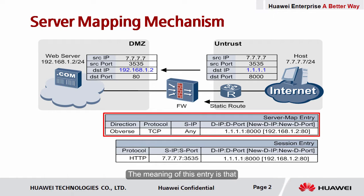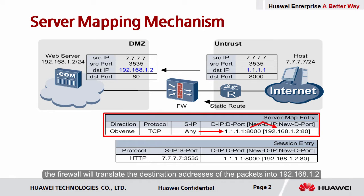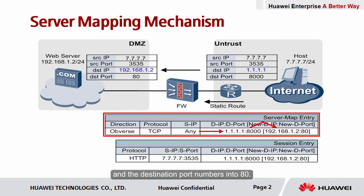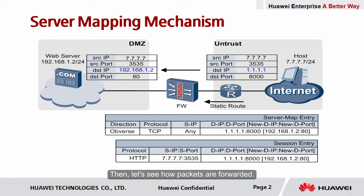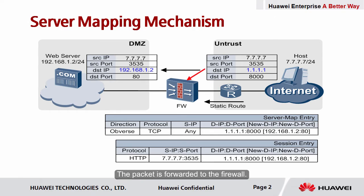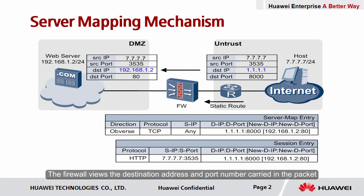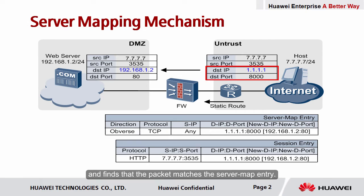The meaning of this entry is that for packets from any source address to 1.1.1.1 port 8000, the firewall will translate the destination addresses of the packets into 192.168.1.2 and the destination port numbers into 80. Let's see how packets are forwarded. An internet user sends a packet to access 1.1.1.1 port 8000. The packet is forwarded to the firewall, which views the destination address and port number carried in the packet and finds that the packet matches the server map entry.